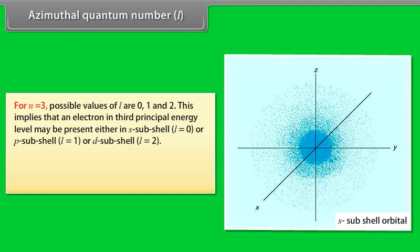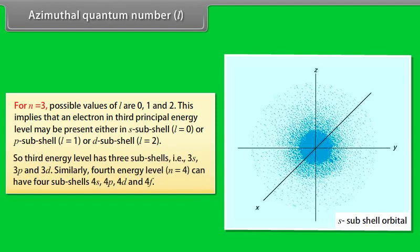For N = 3, possible values of L are 0, 1, and 2, meaning an electron may be in the S subshell (L = 0), P subshell (L = 1), or D subshell (L = 2), giving three subshells: 3S, 3P, and 3D. Similarly, for the fourth energy level (N = 4), there are four subshells: 4S, 4P, 4D, and 4F.